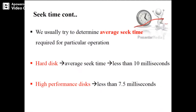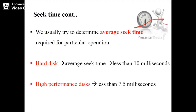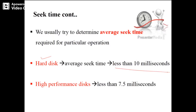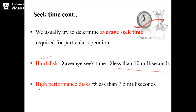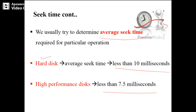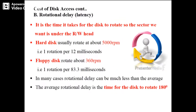Average seek time is what we usually try to determine for a particular operation. For a hard disk, the average seek time is less than 10 milliseconds, and for a high performance disk it is less than 7.5 milliseconds. We usually calculate the average seek time.